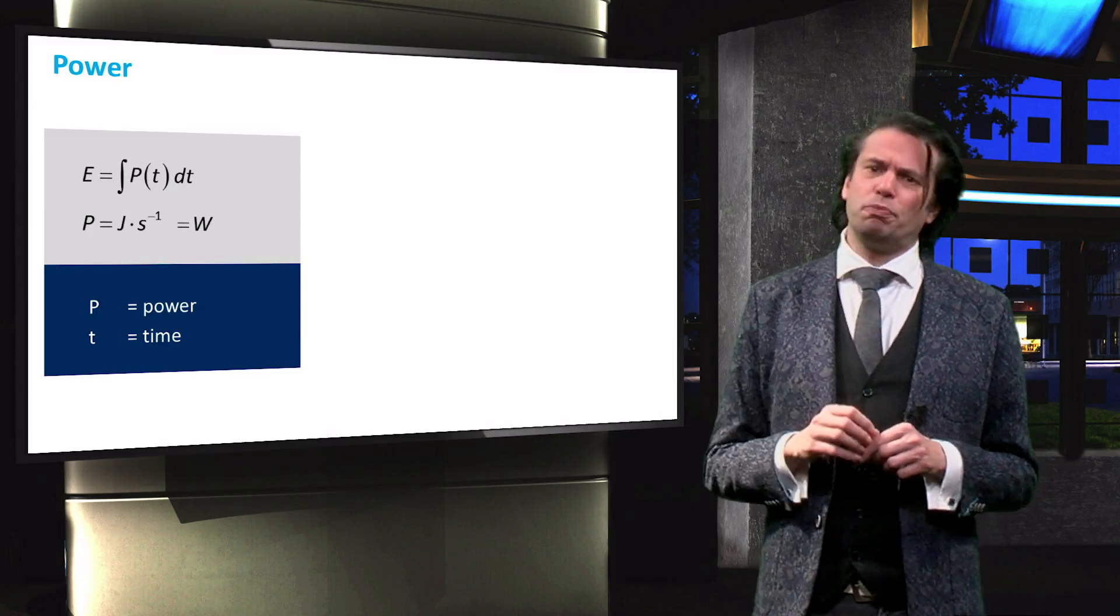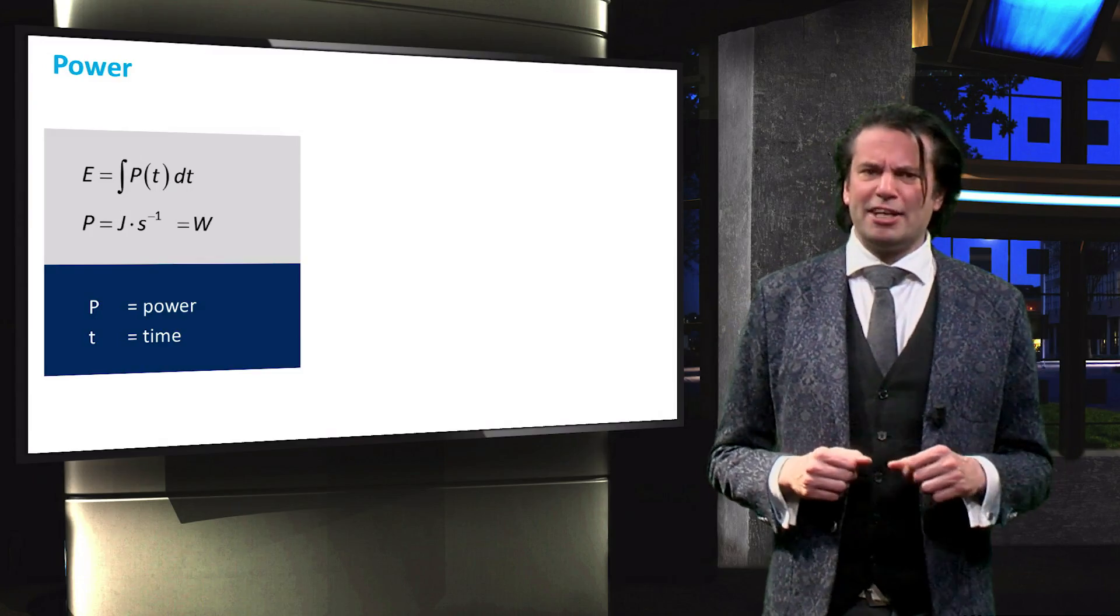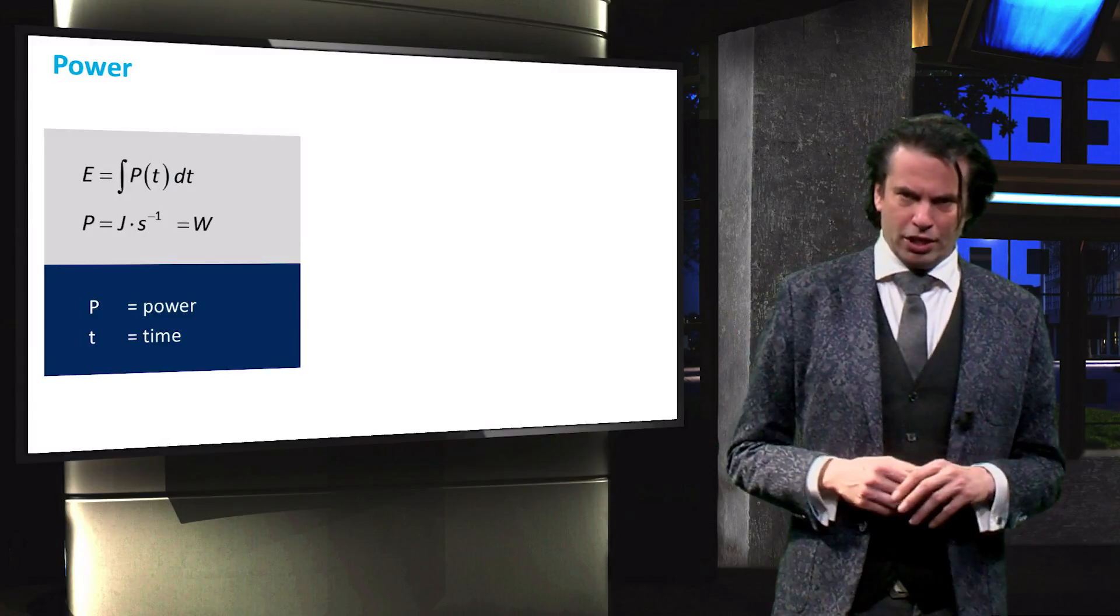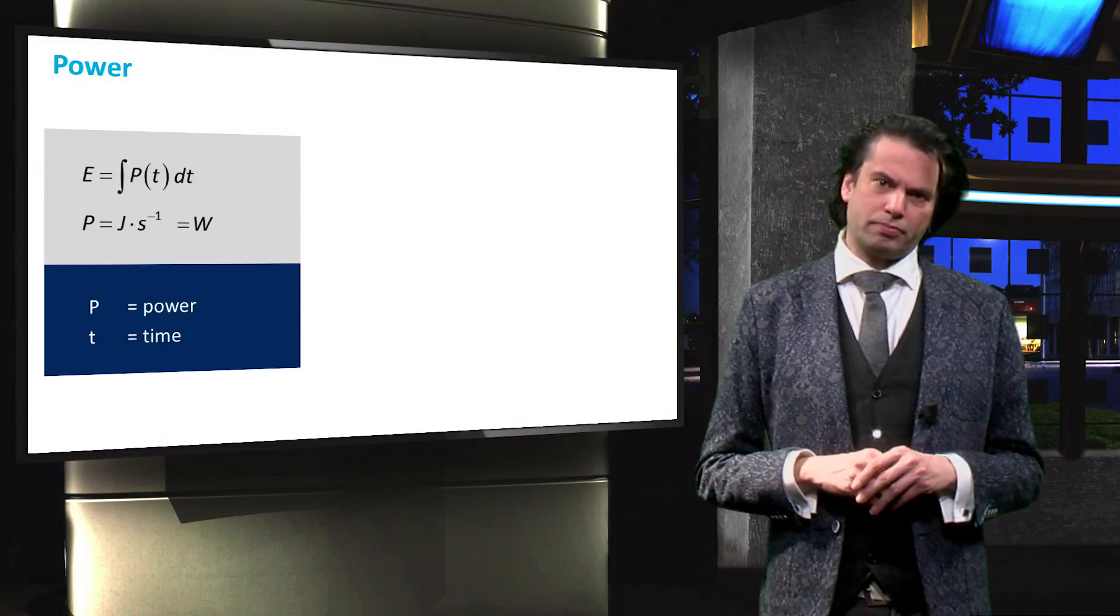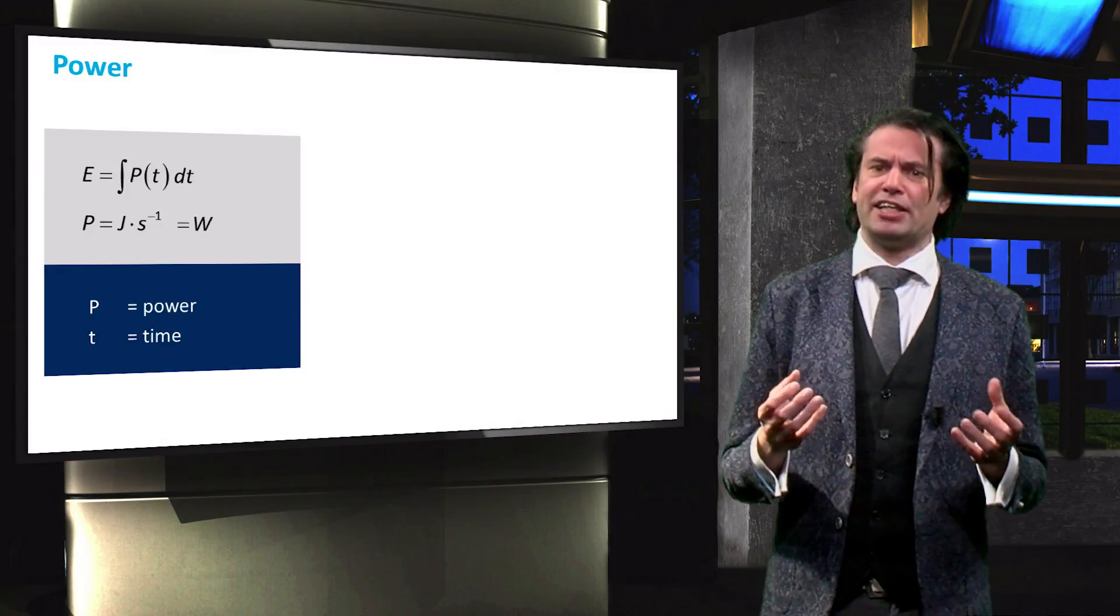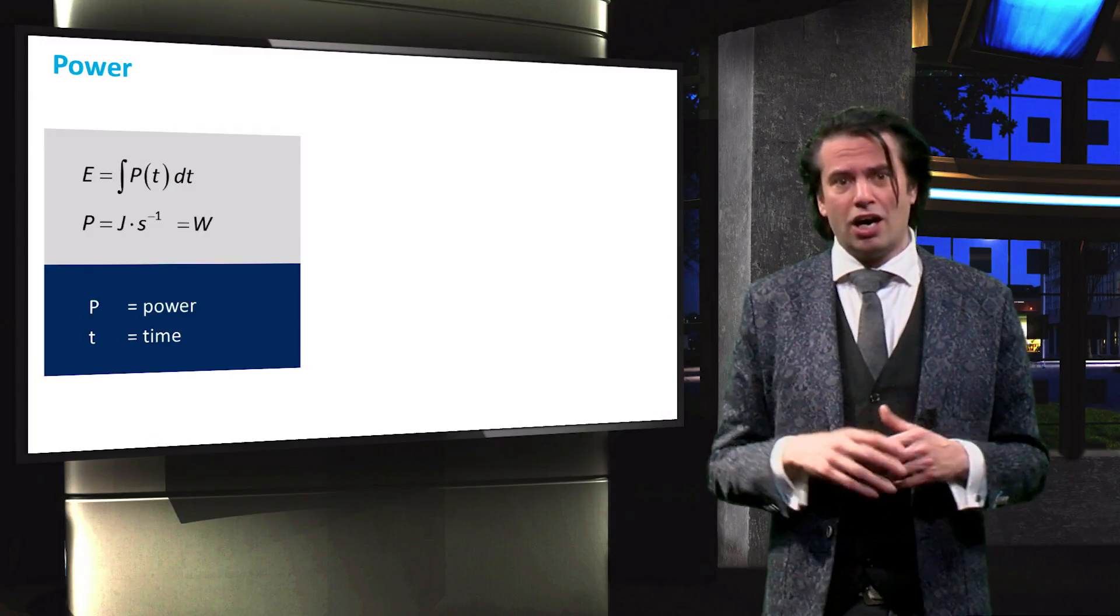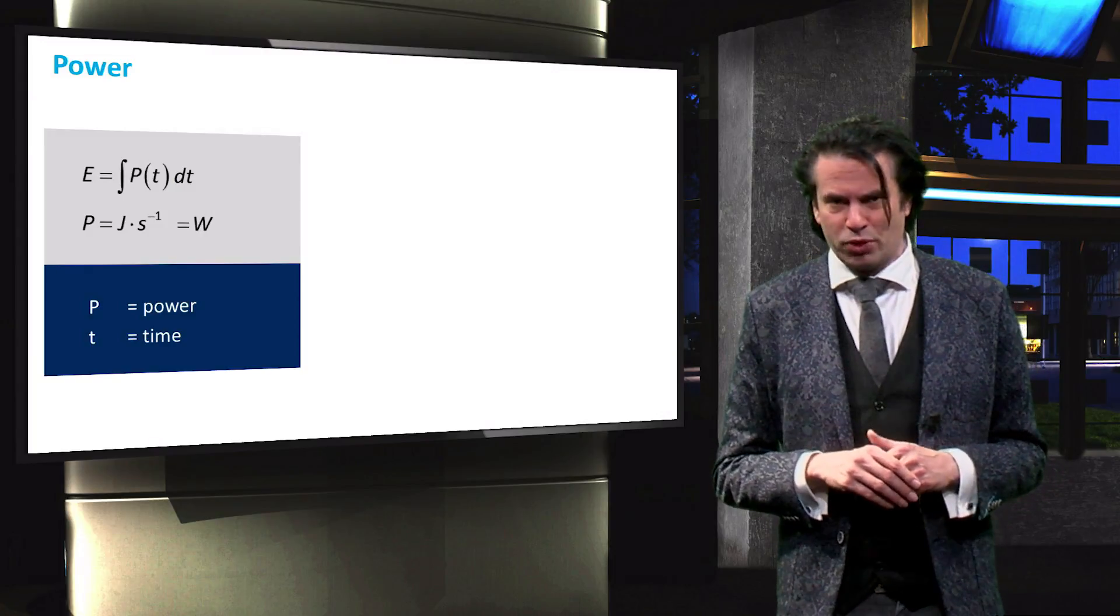Now on to power. The power P is defined as the amount of energy used per unit time, denoted by t. Power is therefore expressed in joules per second. One joule per second is also known as a watt after Scottish engineer James Watt.